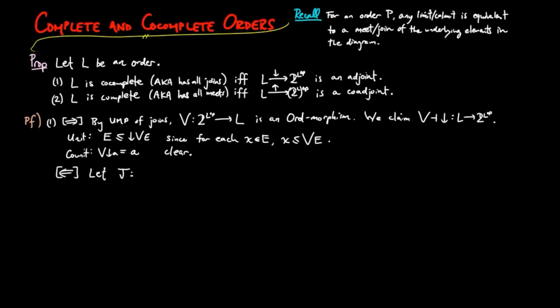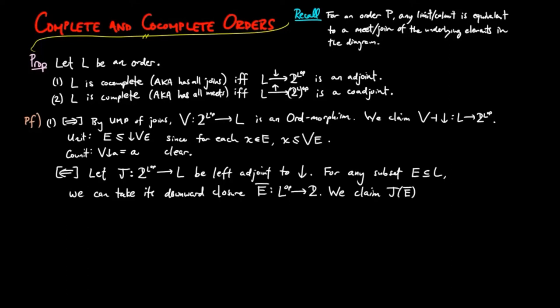Conversely, let J be left adjoint to the down segment functor. For any subset E of L, we can take its downward closure, E bar. We claim J evaluated on E bar is the join of E in L.